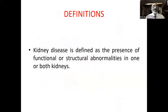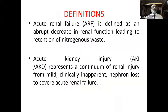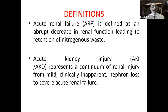The definition: kidney disease is defined as the presence of functional or structural abnormalities in one or both kidneys. Acute renal failure is defined as an abrupt decrease in renal function leading to retention of nitrogenous waste. Acute kidney injury — also called AKI, RF, or AKD — represents a continuum of renal injury from mild, clinically inapparent nephron loss to severe acute renal failure.